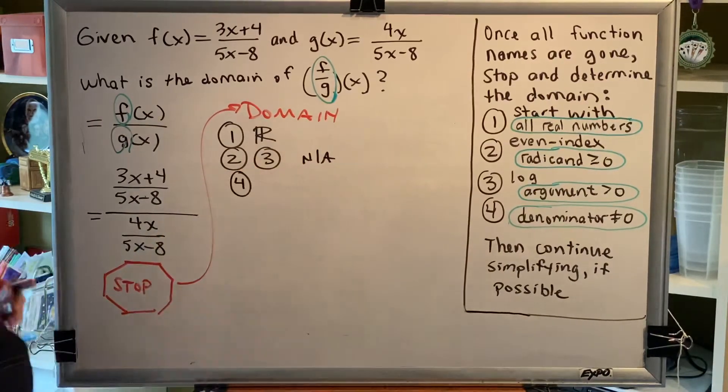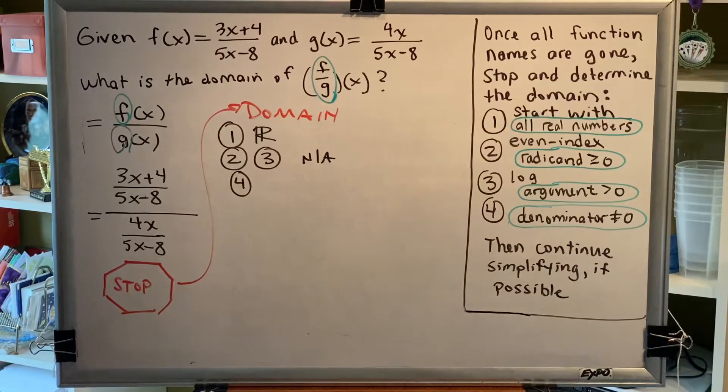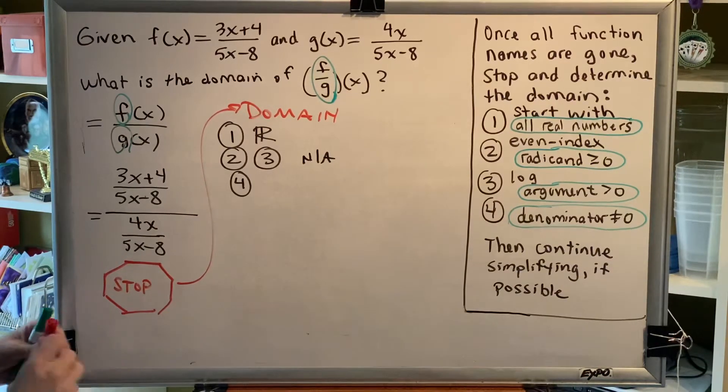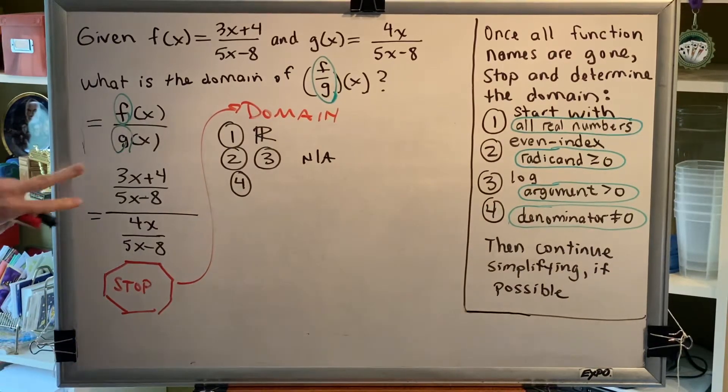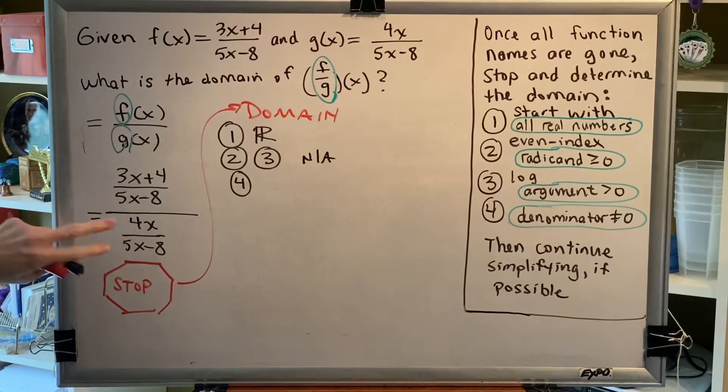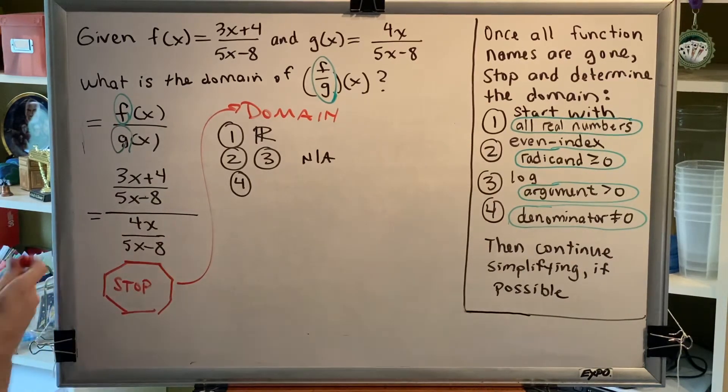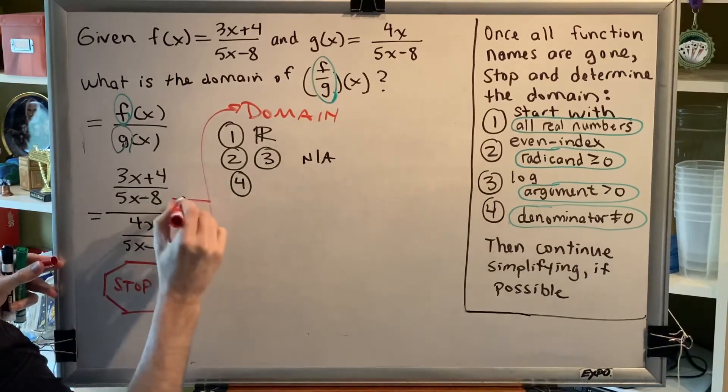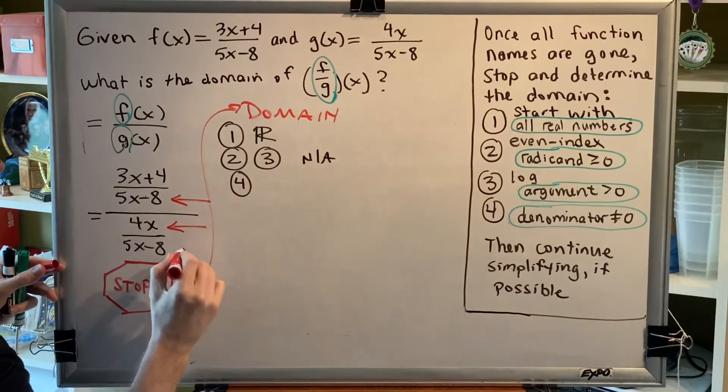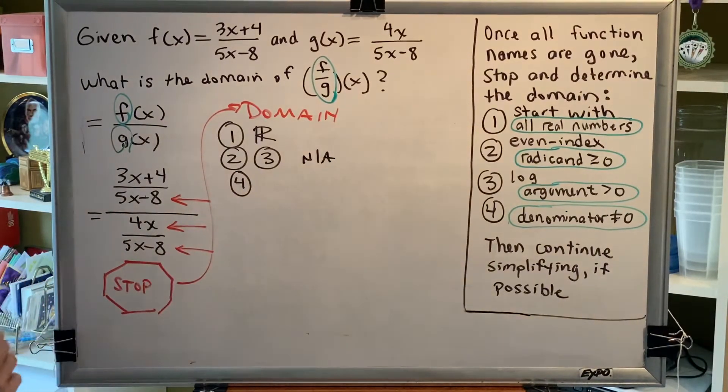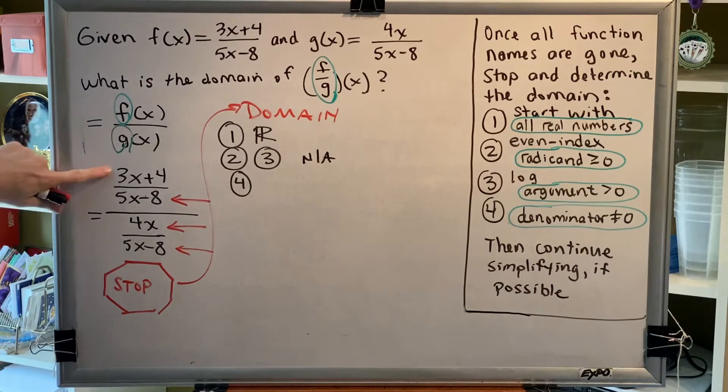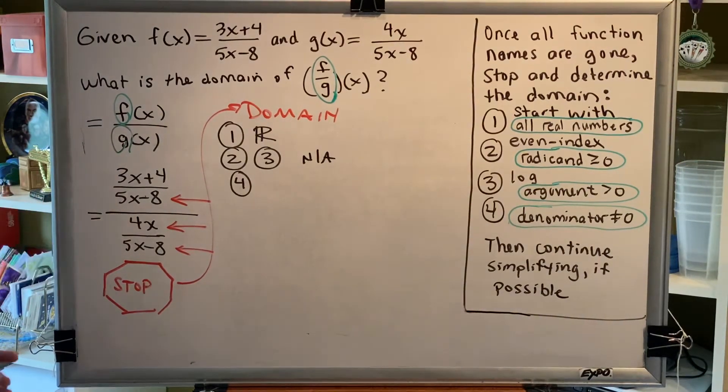Step four is to look for denominators, and this is where things get very interesting. We know that when we're dealing with something of the form fraction over fraction, there are three places that are not allowed to be zero. We are not allowed to have a zero here, here, or here. Zero in the numerator of the numerator is okay, but not in any of these three places.